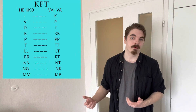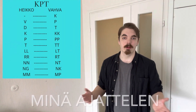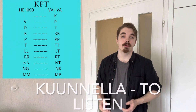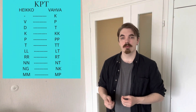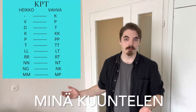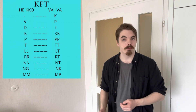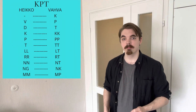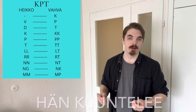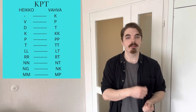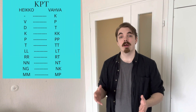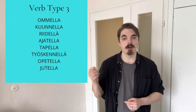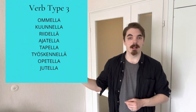We get AJATELLA, and we do the same for any type 3 verb. KUUNNELLA has a double N — we find it on the weak side, and next to it is NT, so it becomes KUUNTELE: MINÄ KUUNTELEN, SINÄ KUUNTELET, HAN KUUNTELEE — and so on for every form. HAN and HE are no different this time; only in verb type 1 are they exceptions to the consonant gradation rule. Here are some type 3 verbs for you to practice with, and remember to look at the consonants that come right before the LLA at the end.